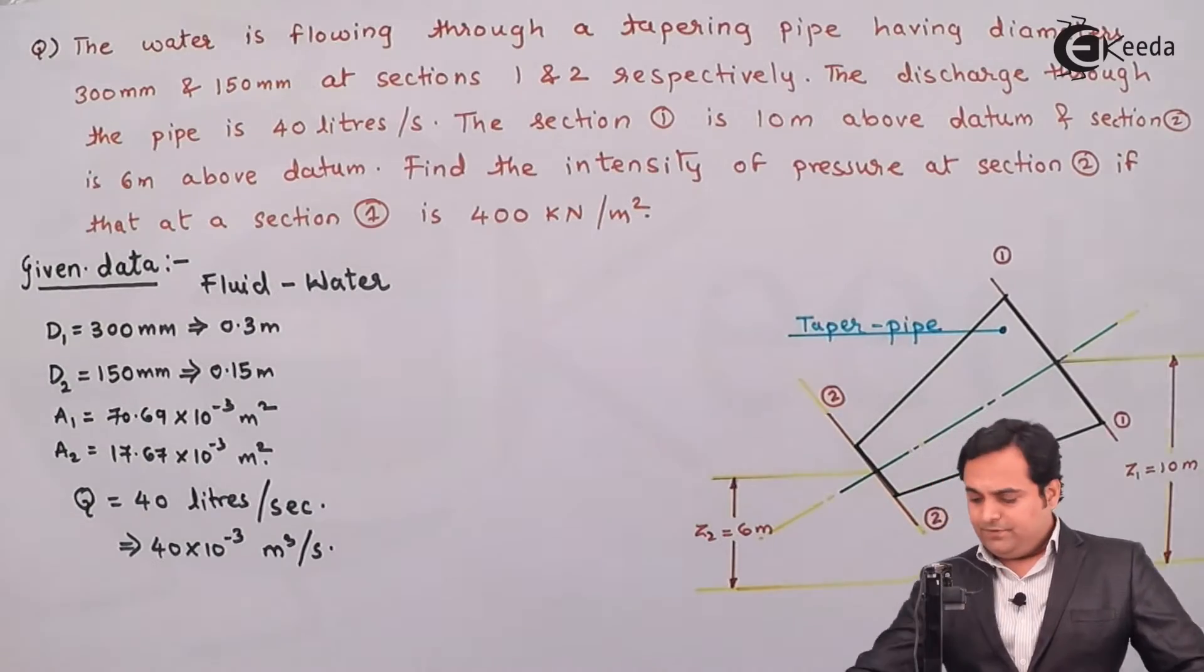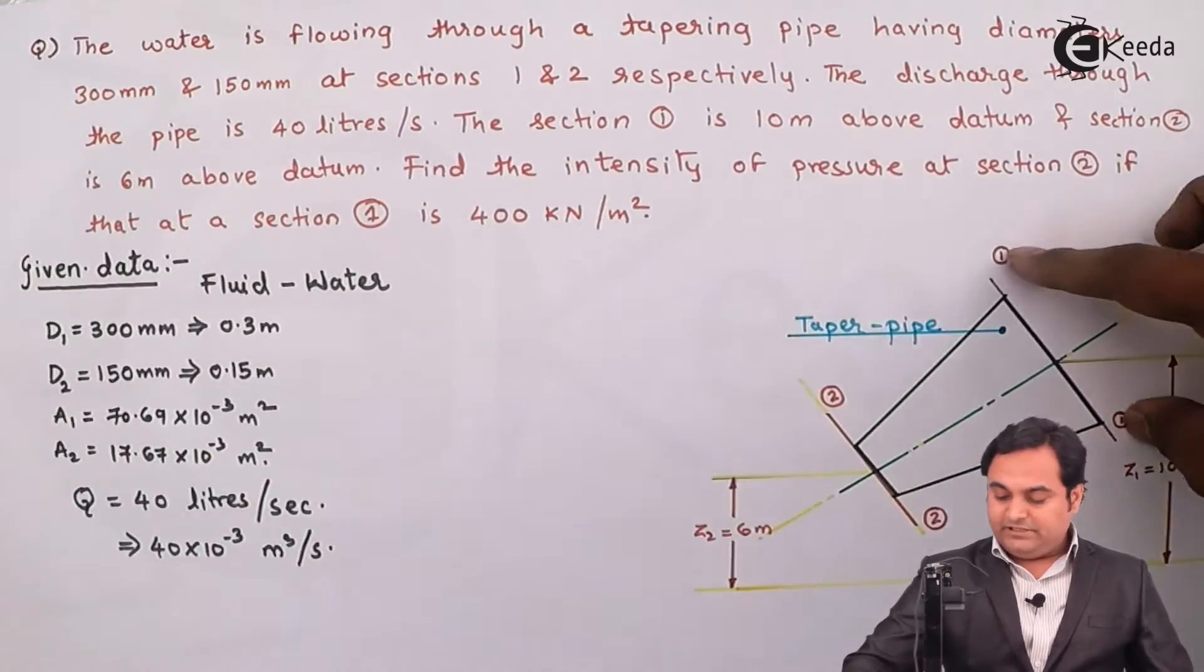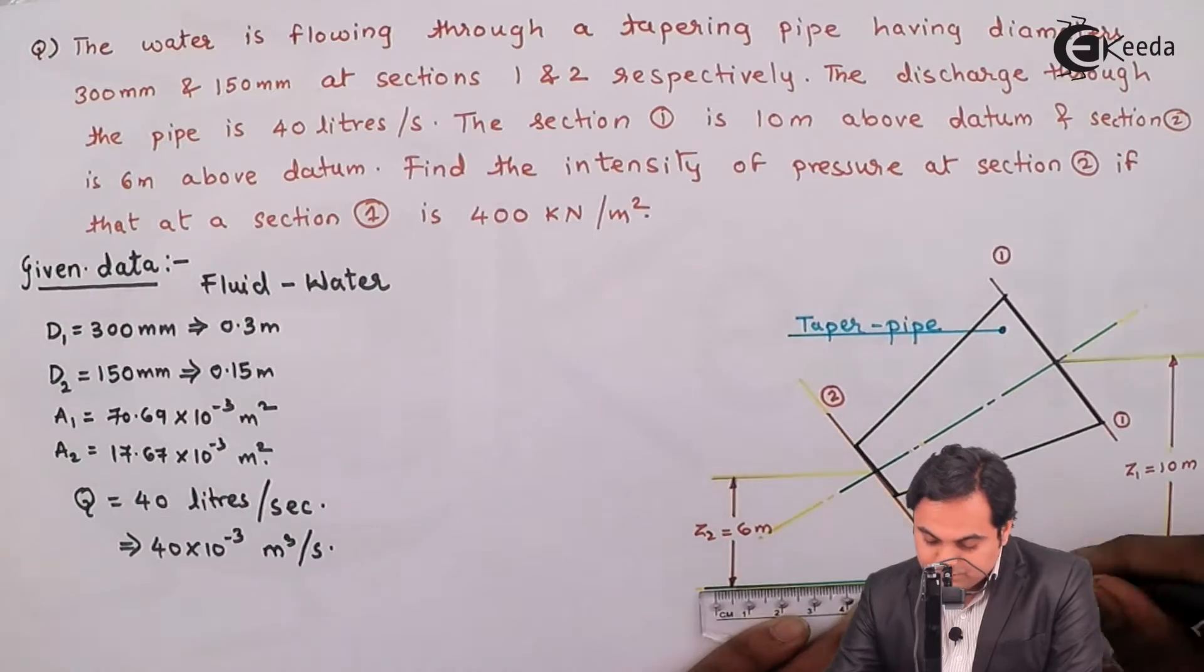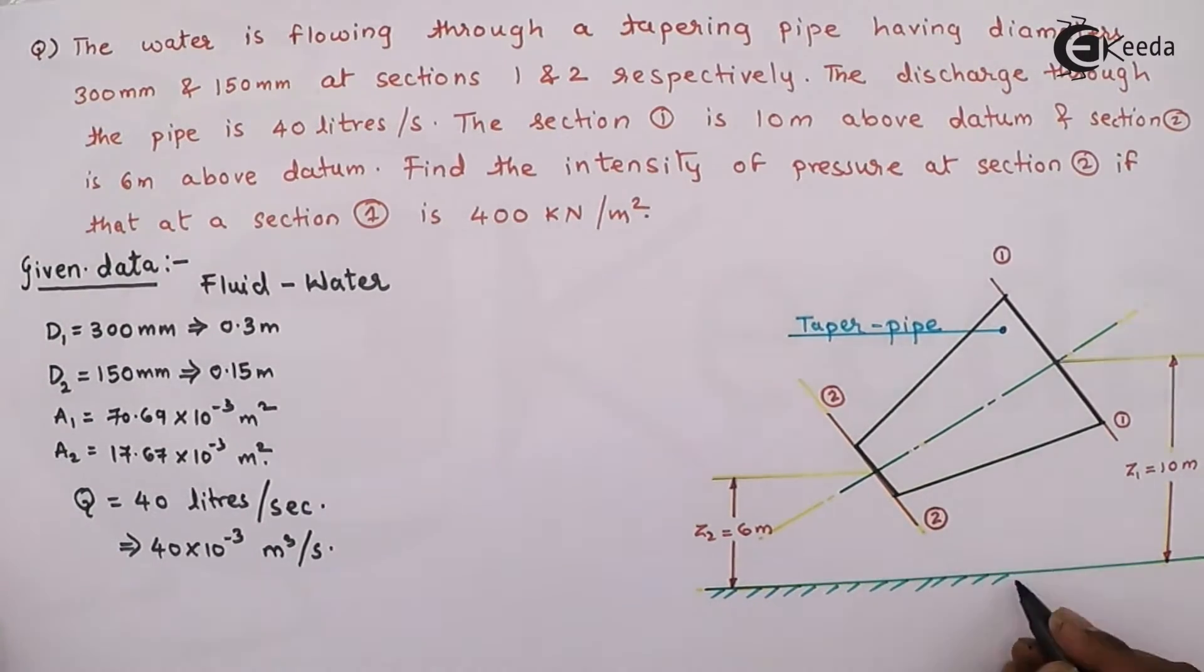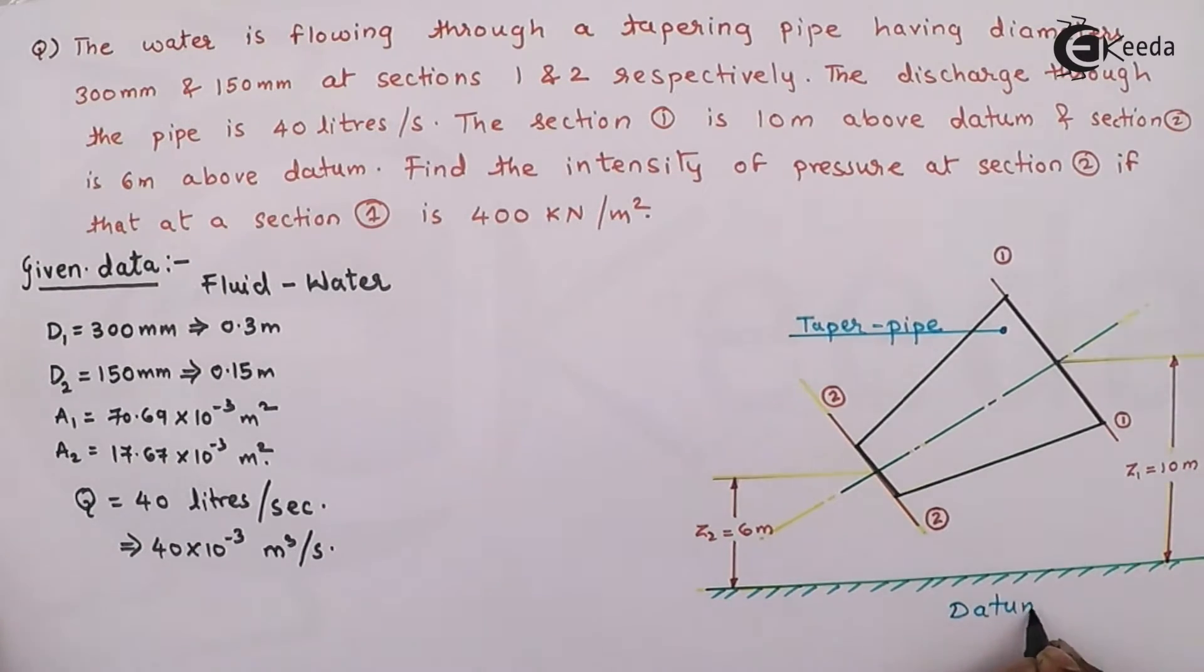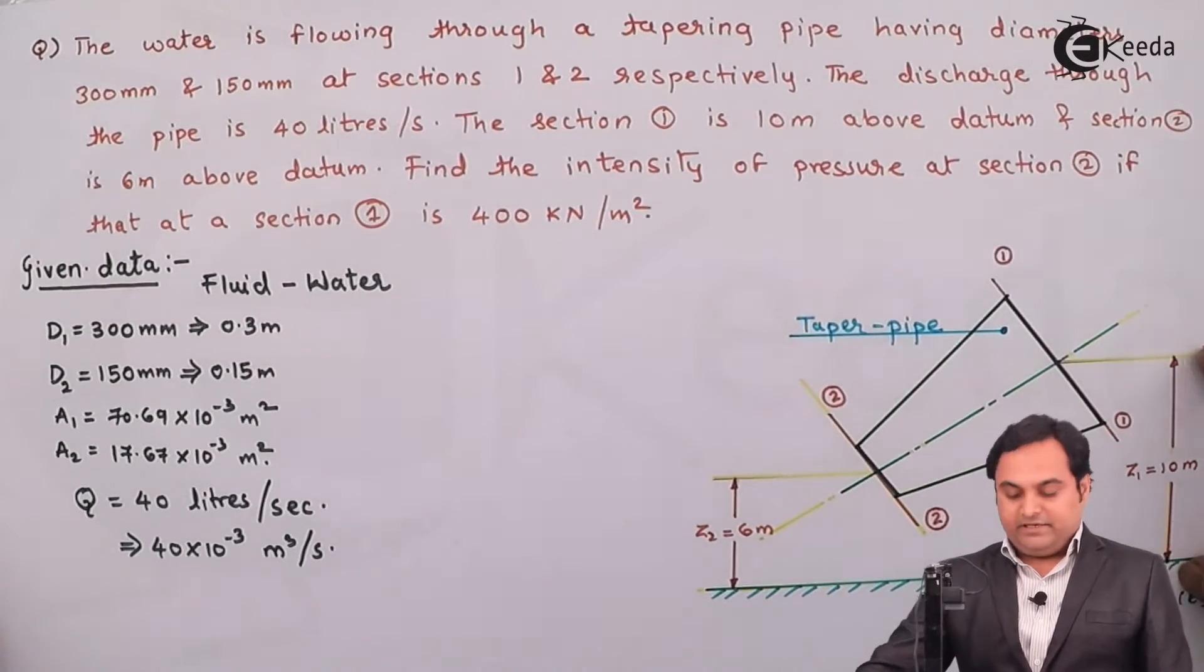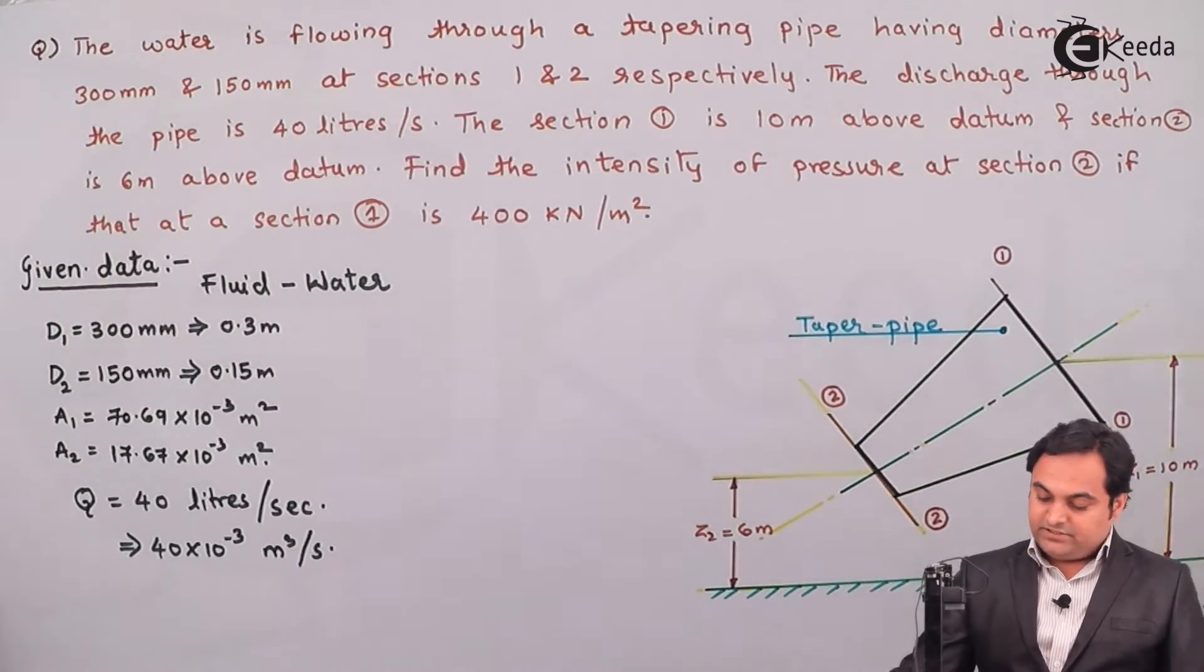So here is the tapering pipe as they have given. Section 1 is having 300 mm diameter and that is at a height of 10 meter from a datum which is common to both sections. From the datum, section 1 is at 10 meter height, section 2 is at 6 meter height, so that indicates it is a tapering pipe.